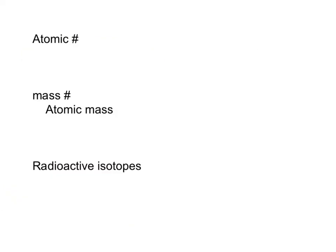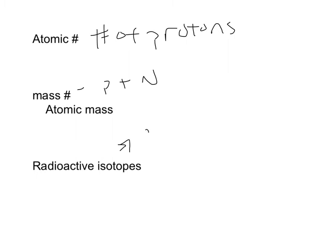Our atomic number is the number of protons found in the nucleus of the atom. Our mass number is protons plus neutrons. Our atomic mass is an approximation of the mass number — it's the average number across isotopes. Isotopes have different numbers of neutrons than the original element.